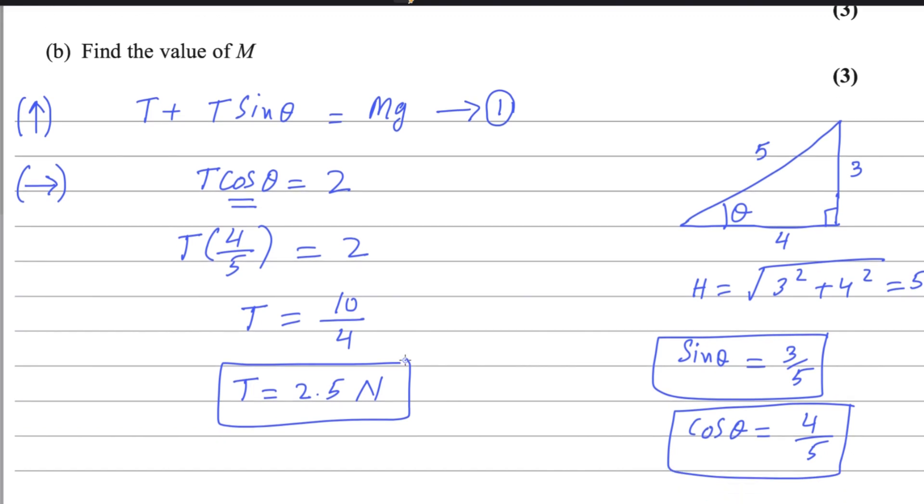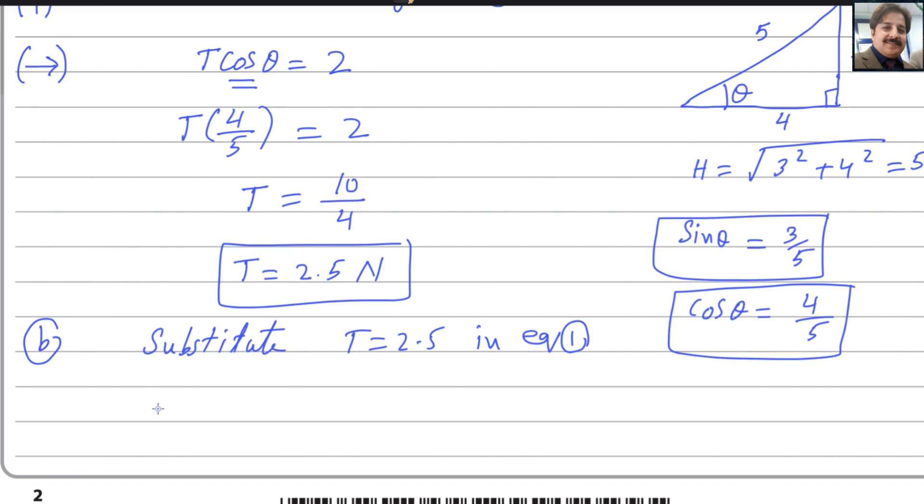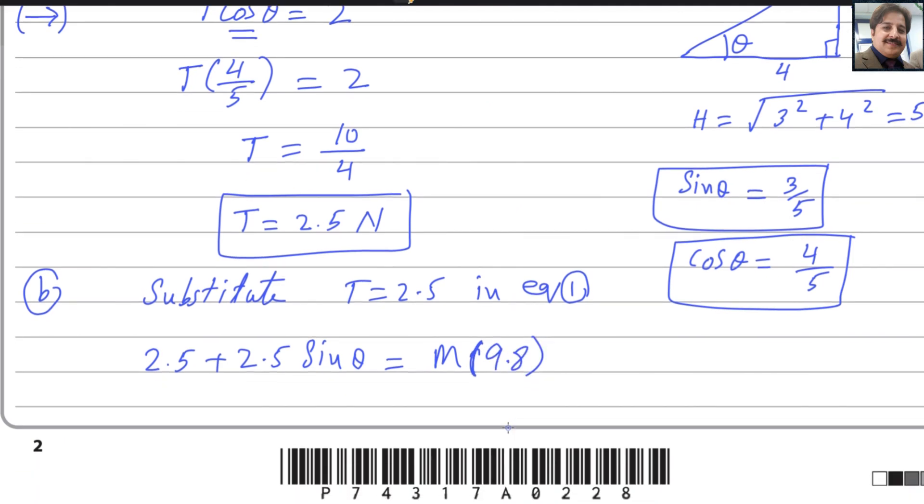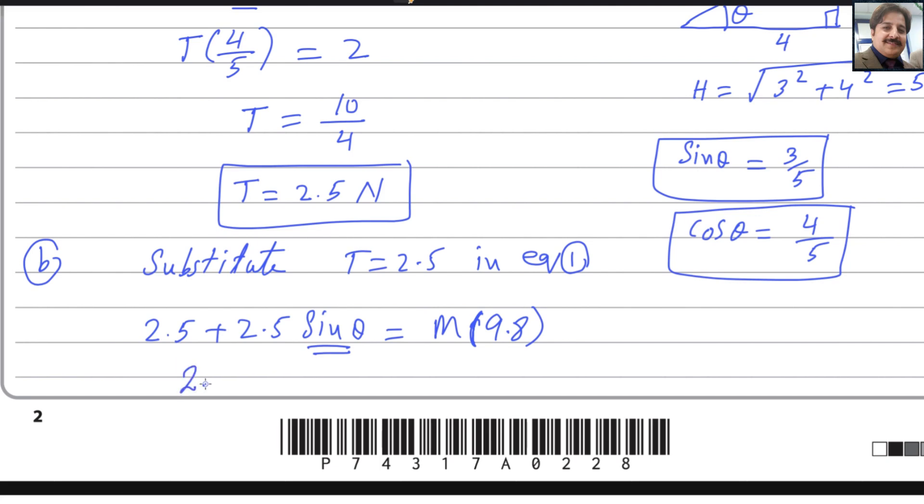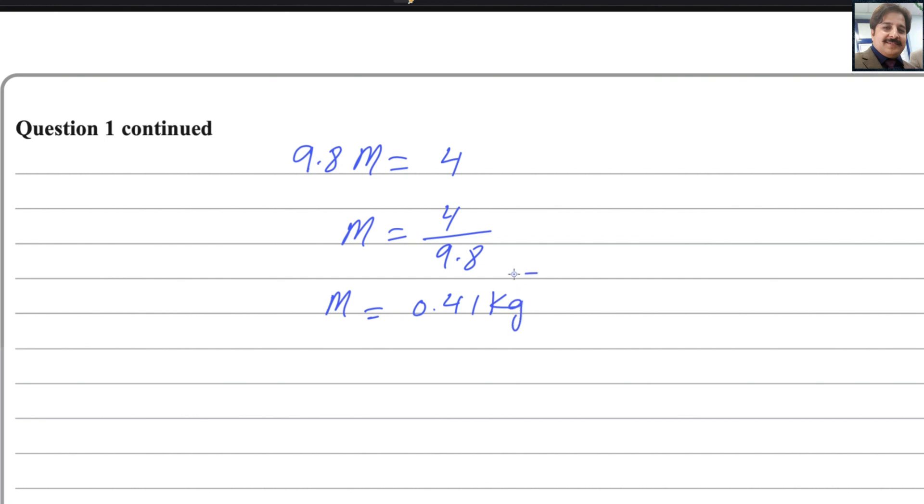For second part, we need to find the value of m. Substitute T equals 2.5 in equation 1. T plus T sine theta equals 2.5 plus 2.5 sine theta equals mg. You can use 9.8 here. Substitute the value for sine theta as well, 2.5 plus 2.5 times 3 over 5 equals 9.8m. We can write 9.8m equals 4, so m equals 4 divided by 9.8, m equals 0.41 kg. This is the answer for second part. Question number 1 is done. Thank you.